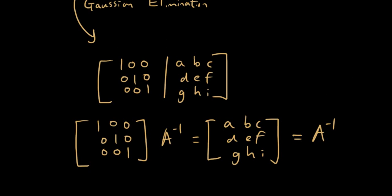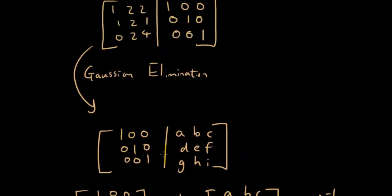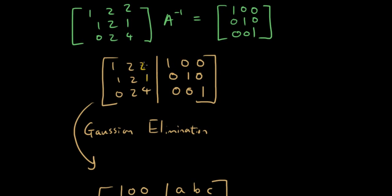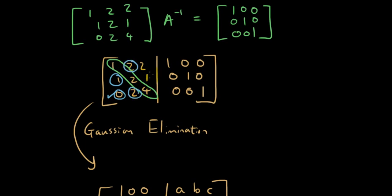So what we want to do now is use Gaussian Elimination to get the result we want. Starting from the bottom left-hand corner, we want to turn the numbers other than those on the leading diagonal into zeros. So we want to start at the bottom left — this is already zero, which is great — then we want this to become zero, and from the middle we want these to become zero, and then we want this and this to become zero.